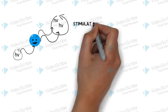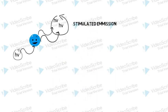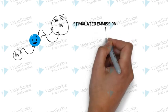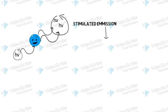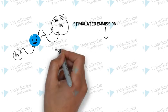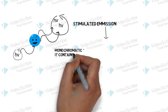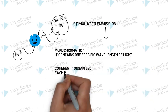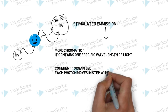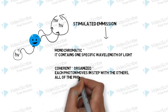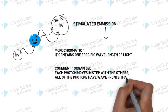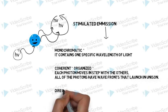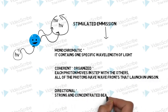This is known as stimulated emission. Stimulated emission is quite different from normal flashlight emission as it has some specific properties. This emission is monochromatic, meaning it contains one specific wavelength of light. It is coherent or organized light, meaning each photon moves in step with the others, or all photon wavefronts are in unison. It is also highly directional, meaning it is a strong and concentrated beam of light and cannot be diffused easily.